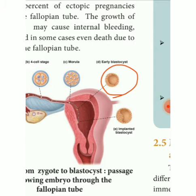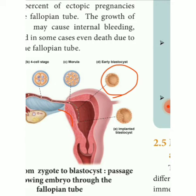The blastocyst is composed of a single layer of large flattened cells called the trophoblast. It has a small cluster of 20 to 30 round cells in the inner cell mass. The inner cell mass of the blastocyst develops into an embryo and becomes embedded in the endometrium wall. You can see in the picture: the morula enters the uterus, the uterus wall thickens, then the early blastocyst forms, and this blastocyst attaches to the uterine wall — this condition is called the embryo.